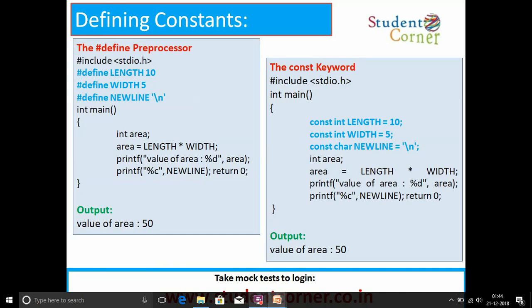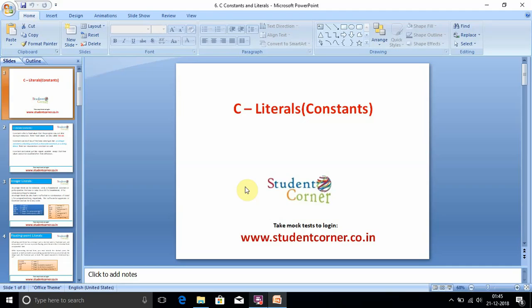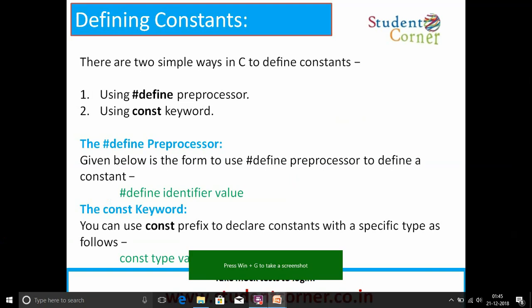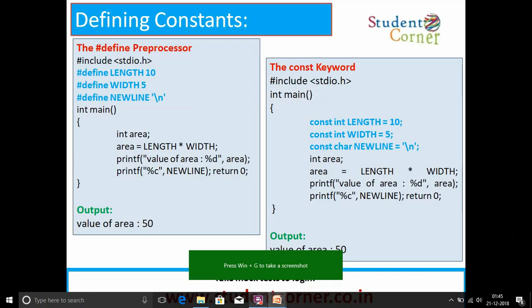Here are two examples. Blue color statements are indicated as constants. Here, #include <stdio.h>, #define LENGTH 10, #define WIDTH 5, #define NEWLINE '\n'. Area = LENGTH * WIDTH means LENGTH is replaced with 10 and WIDTH is replaced with 5, so 50 is assigned to area. We are printing the value of area with printf.